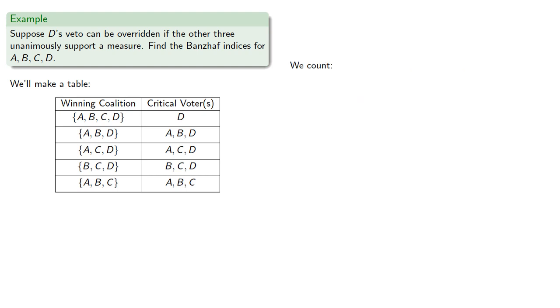And now we count. D is critical in four coalitions. Meanwhile A, B, and C are each critical in three coalitions. So we should divide each of these by the sum 4 plus 3 plus 3 plus 3.